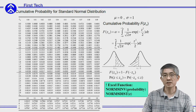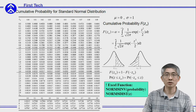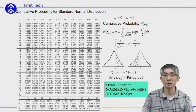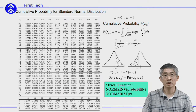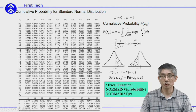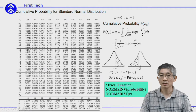In the old days, we would use tables to find out the probabilities, and this is a very typical table found in many textbooks. This is called the cumulative probability for standard normal distribution. Standard normal distribution is a normal distribution with mean equal to 0 and standard deviation equal to 1. The cumulative probability is the shaded area where z is smaller than the given number.